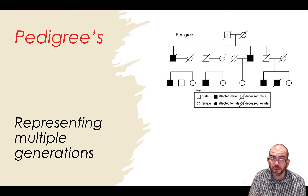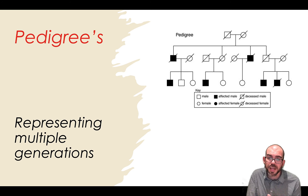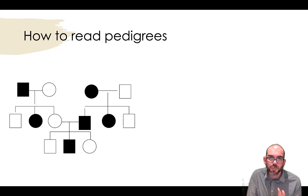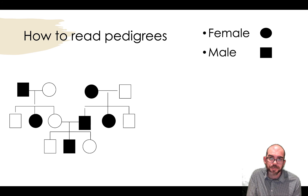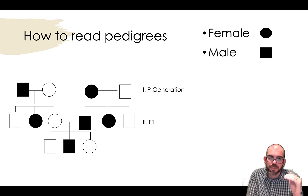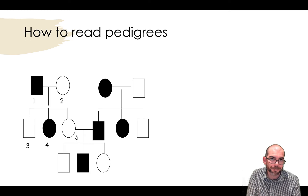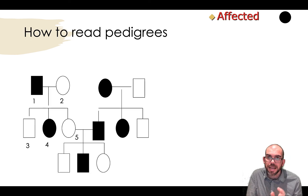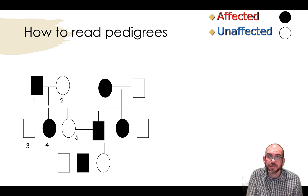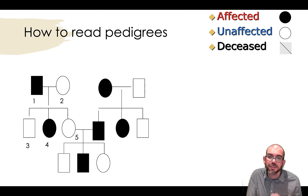The last thing I want us to look at is pedigrees. These are models or ways of representing how traits change over multiple generations. To read a pedigree, the first thing to note is the shapes: females are represented with circles, and males are represented with squares. We begin with our parent generation and work our way down to each filial generation. If a shape is shaded, that means it's affected — it has whatever trait is being discussed. If a shape is open, that means it's unaffected. And if you notice a slash through a square, that means that individual has deceased.